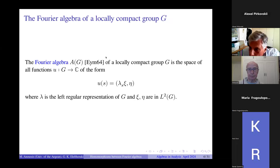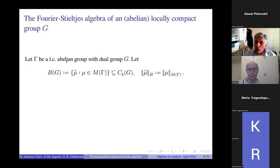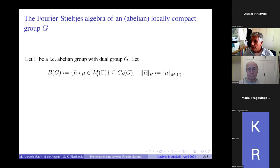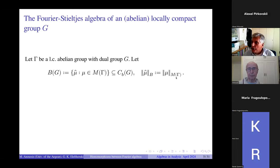Let me take one step back and come back to the abelian case for a little while. Take a locally compact abelian group gamma with dual group G as before. I define B of G to be the set of Fourier transforms not only of L1 functions but of complex measures on gamma. So the Fourier transform of a measure is a continuous bounded function on G.